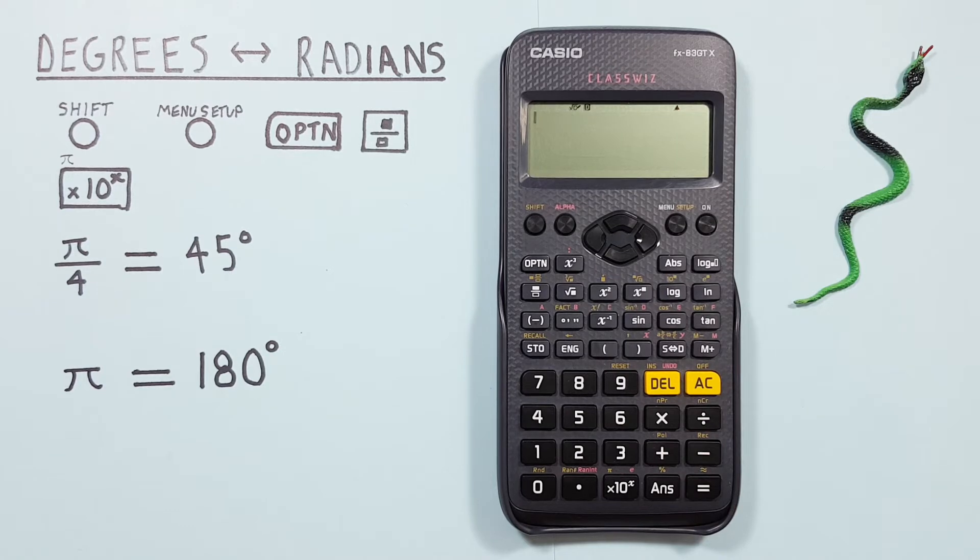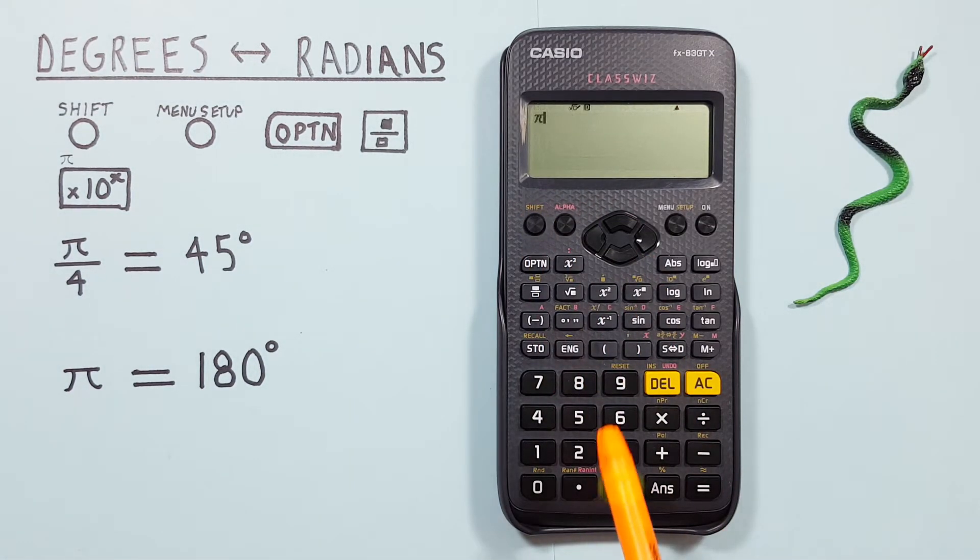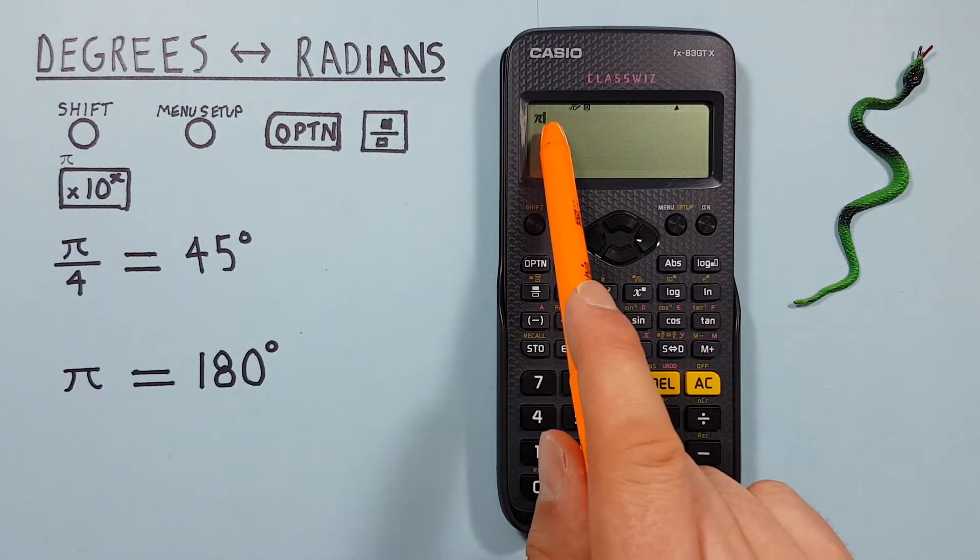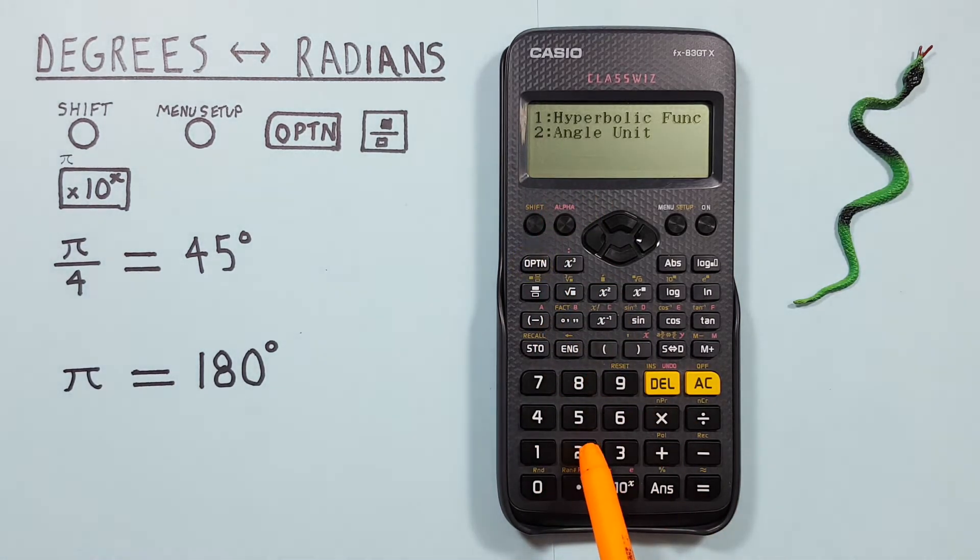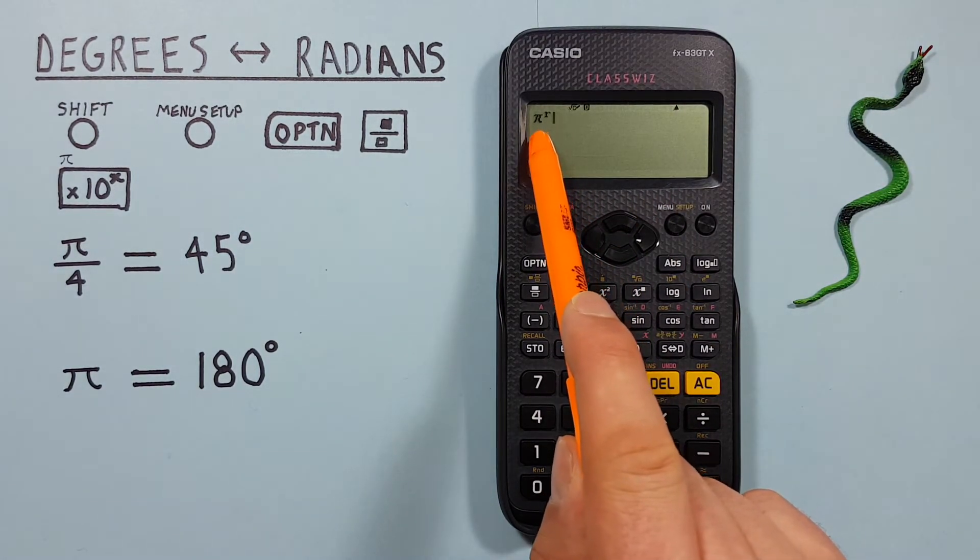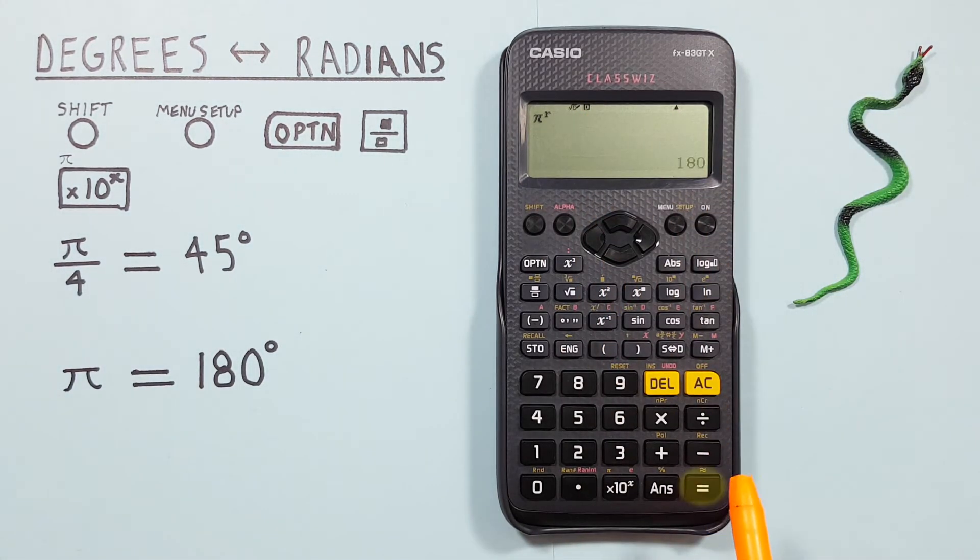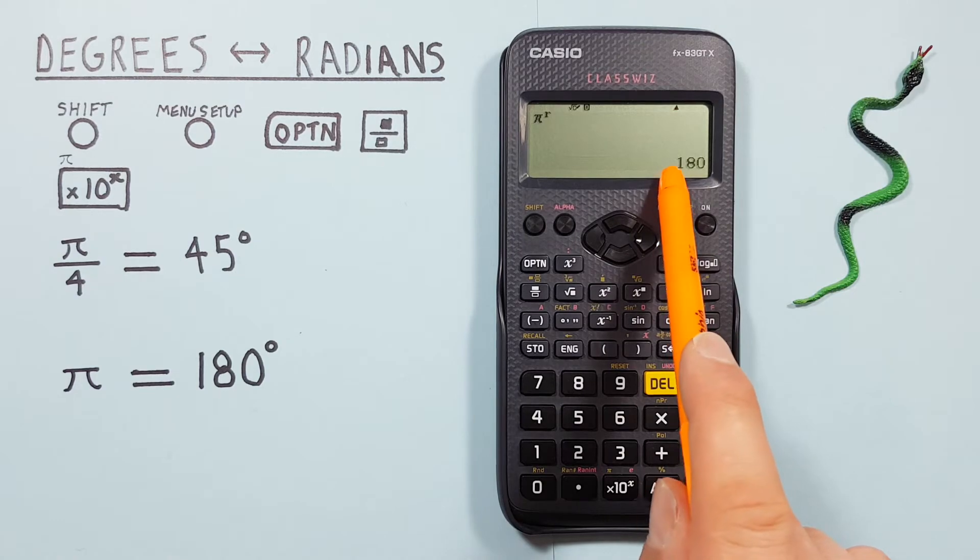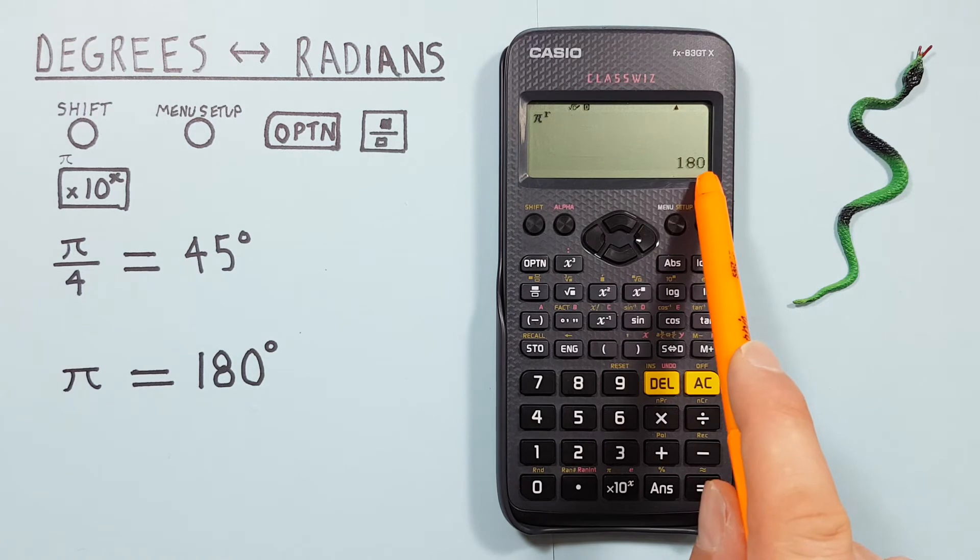If we look at another example, let's keep it simple with just π. We can enter that with Shift times 10 to the x. There's our π. And then we press Option, 2 for Angle Units, and then 2 again for radians to let our calculator know this is a radian. We're in degrees mode and press equals, and we see we get 180. So π radians is the same as 180 degrees.